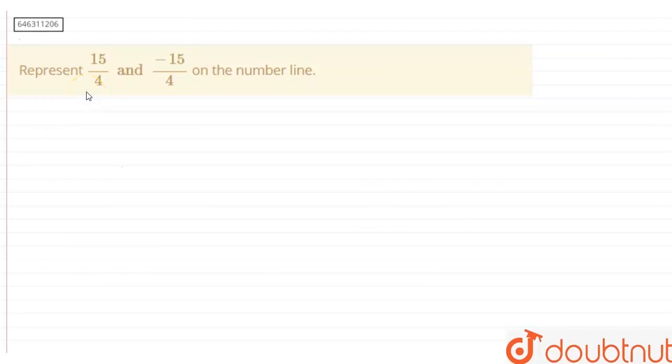In this question, we are asked to represent 15/4 and -15/4 on the number line. So, 15/4 can be written as (12 + 3)/4, which can be written as 12/4 + 3/4, and this can be written as 3 + 3/4. And similarly,